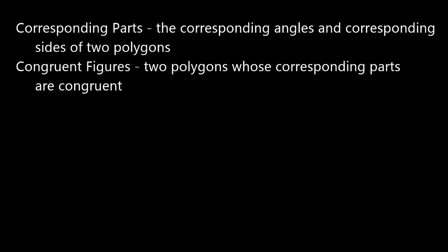Those two definitions are these. Corresponding parts, specifically of polygons, are the corresponding angles and corresponding sides of two polygons. Just like when we talked about corresponding angles when referring to lines intersected by a transversal, we're talking about the angles or sides that are in the same location. For two polygons or triangles to be congruent, all their corresponding parts must be congruent — that's the definition of congruent figures.